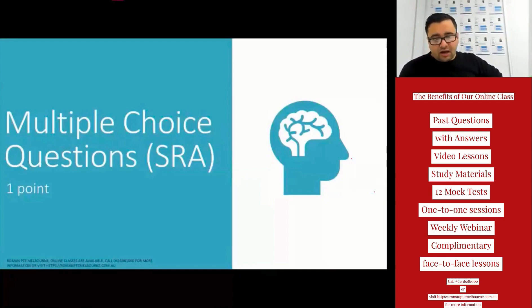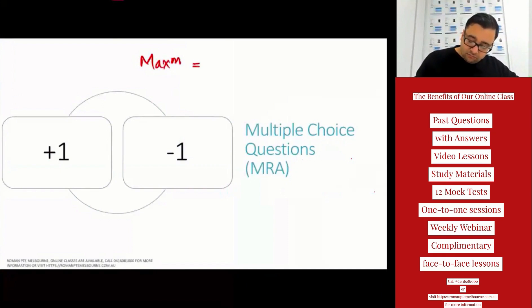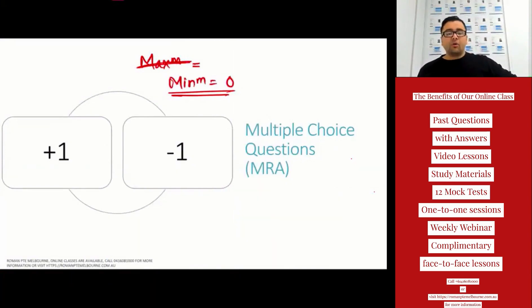Then you have multiple choice multiple right answer. You get one point for one right answer and minus one for one wrong answer. The maximum possible score from this section is—sorry, I mean to say minimum score from this section is zero. You can never get less than zero.